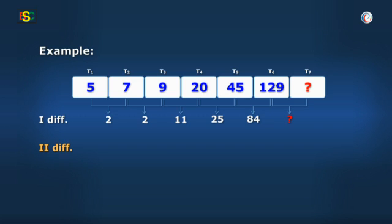Finding second difference, we get 0, 9, 14, and 59. Clearly, the first series of differences is not in AP.